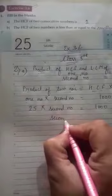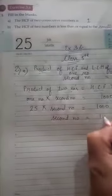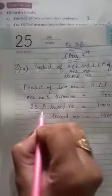Second number is equal to 1000 divided by 25. When we change side, then multiply change into divide.